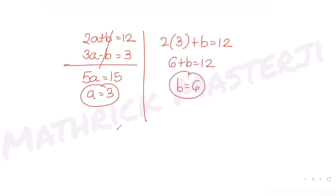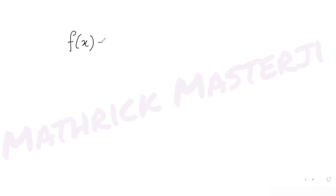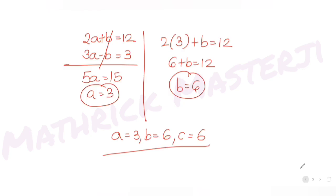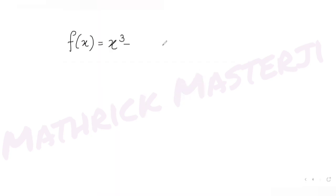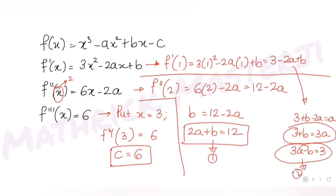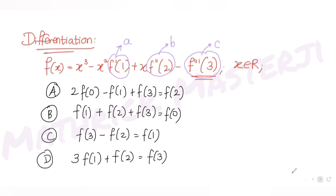So f(x) = x³ − 3x² + 6x − 6. We have the complete function.